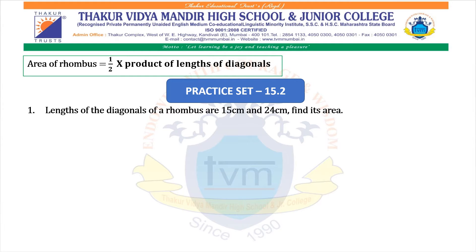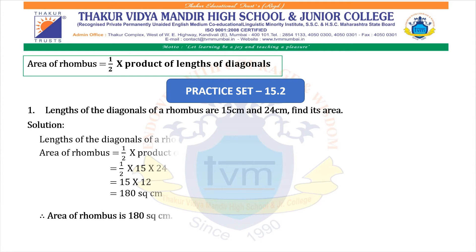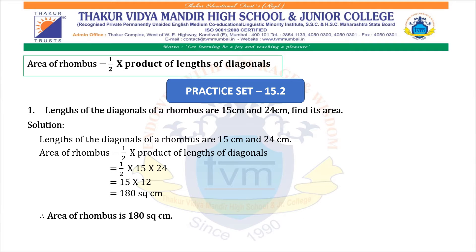Question 1: Lengths of the diagonals of a rhombus are 15 cm and 24 cm. Find its area. Solution: Area of rhombus = half into product of length of diagonals = half into 15 into 24 = 15 into 12 = 180 square centimeters. Therefore, area of rhombus is 180 square centimeters.